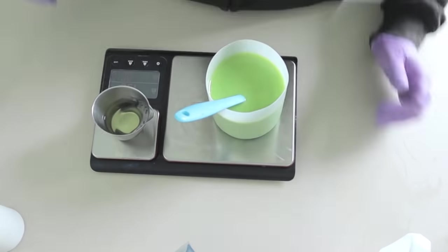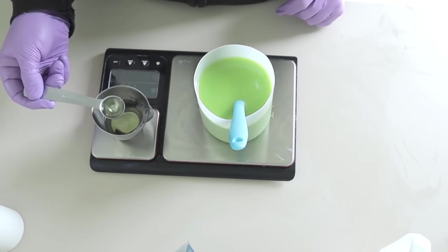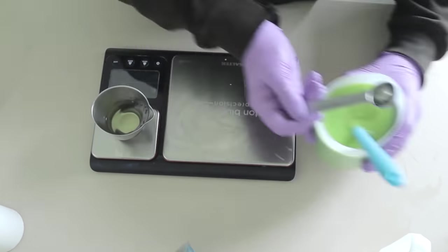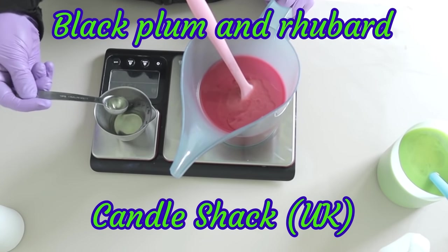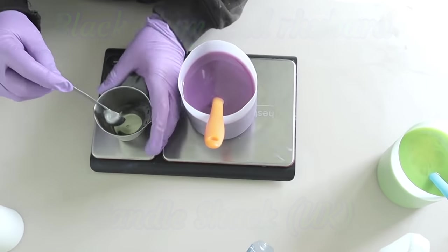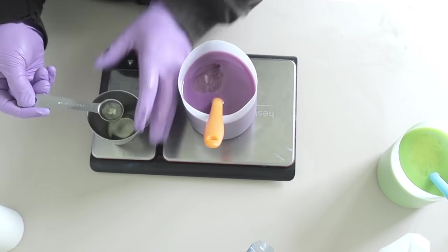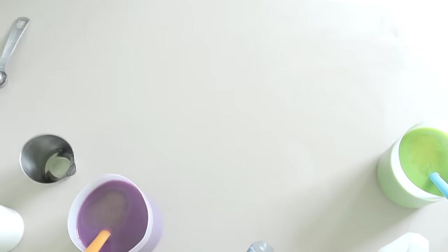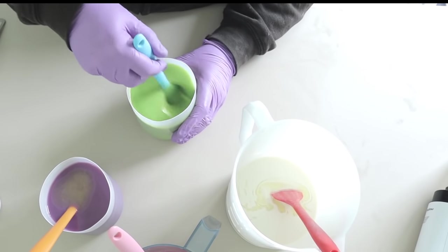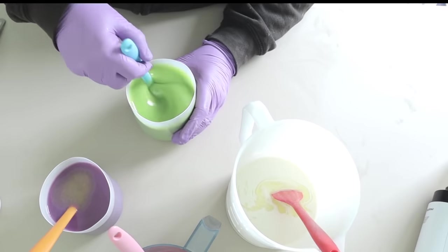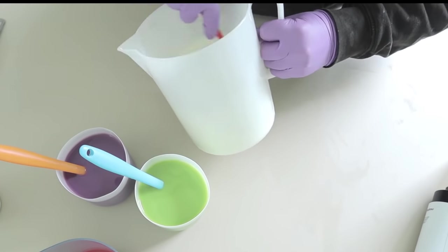And then I'm going to weigh out the fragrance oil for each section of my batter. Now the fragrance oil I'm using is black plum and rhubarb from Candleshack in the UK, and I'll get that fragrance oil thoroughly mixed in and then transfer into some squeeze bottles.